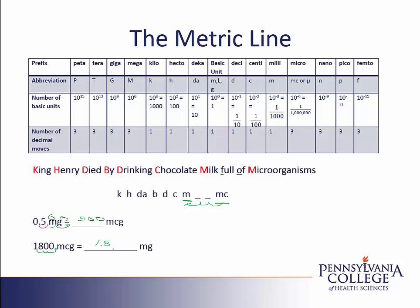I write that without the additional zeros because within the metric system, we're not allowed to have trailing zeros. We can use the metric line for conversions between any of the metric units. Had I been asked to go to grams, I would just continue jumping up my metric line to the base unit, since gram has no prefix. If I wanted to go to kilograms, I'd keep jumping up until I got to K, the prefix for kilo.